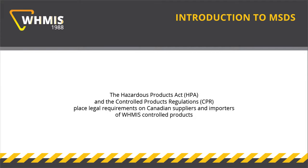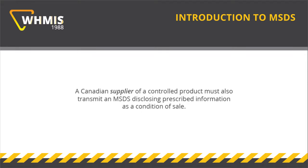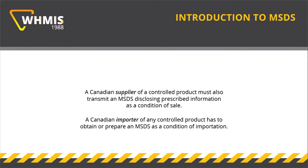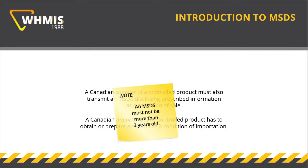The Hazardous Products Act and the Controlled Products Regulations place legal requirements on Canadian suppliers and importers of WHMIS controlled products. A Canadian supplier of a controlled product must also transmit an MSDS disclosing prescribed information as a condition of sale. A Canadian importer of any controlled product has to obtain or prepare an MSDS as a condition of importation. Note that an MSDS for a controlled product must not be more than three years old.